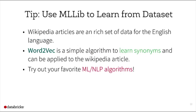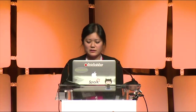The last thing I did with Wikipedia was play around with MLlib. Wikipedia is a great English language dataset. I chose the Word2Vec algorithm because it's simple, learns synonyms, and can easily be applied to each Wikipedia article. I encourage you to try other ML and NLP algorithms — whichever ones are your favorite.